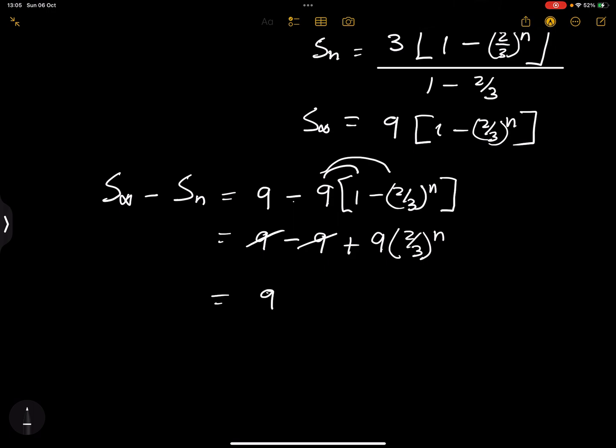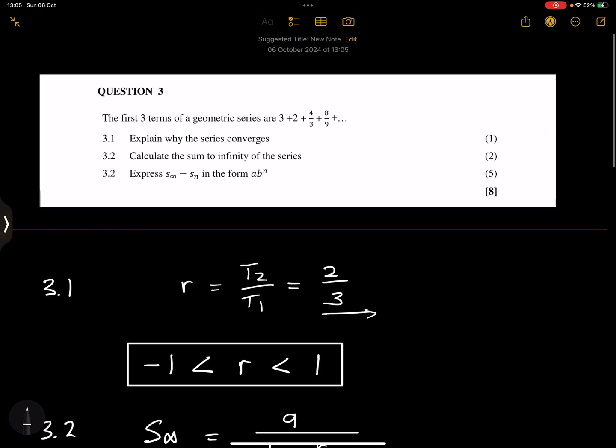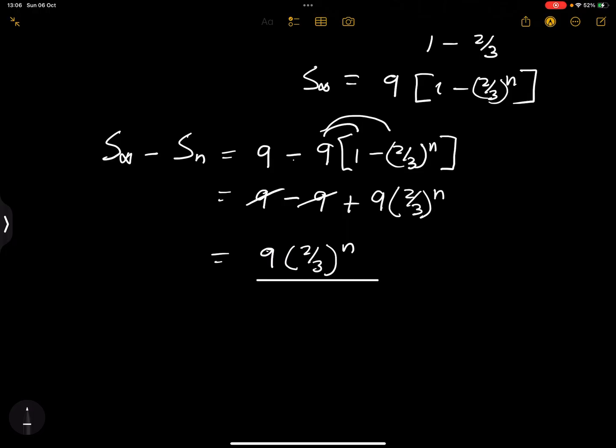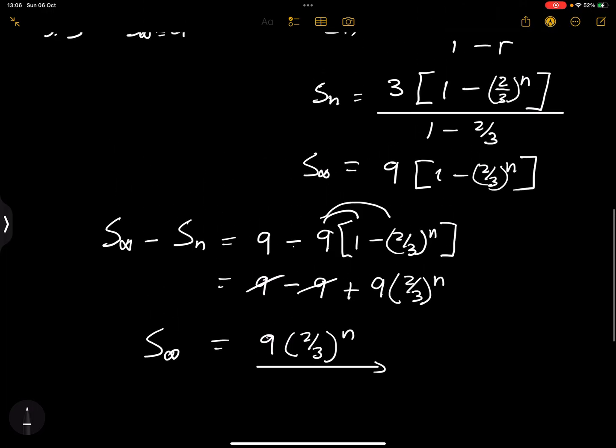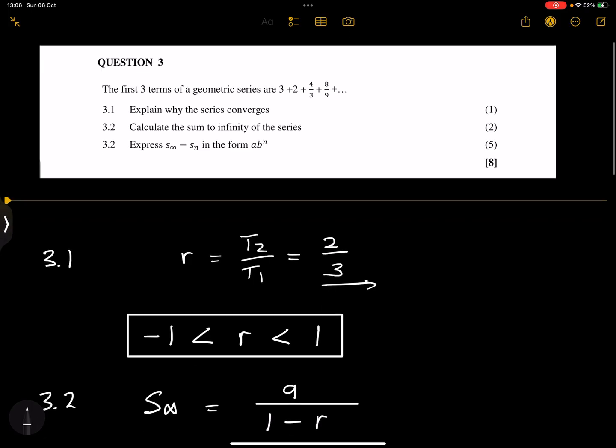We've got 9 times 2 over 3 exponent N. And remember, that's what they asked us to do, to write it as A times B to the exponent N. So that's the expression right there. And that's how the cookie crumbles on this question. We are going to go into the next one.